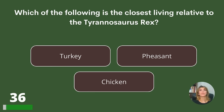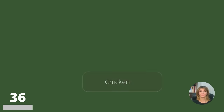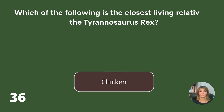Which of the following is the closest living relative to the Tyrannosaurus rex? The turkey, the pheasant, or the chicken? Answer: The chicken.